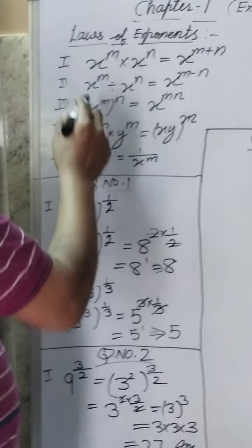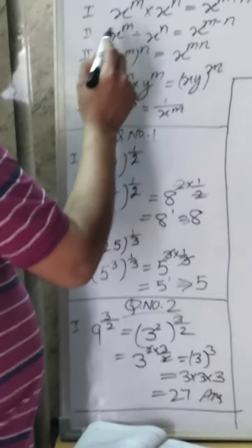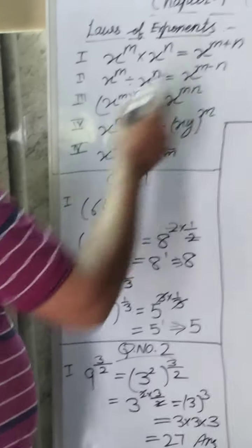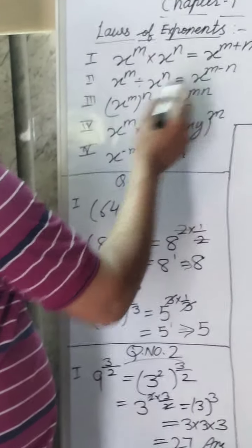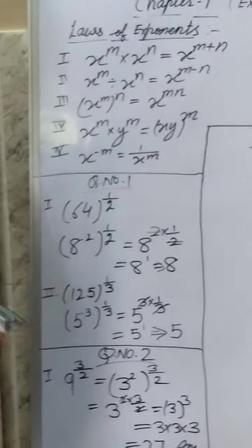Second law, if divide is there and base is same, then power will subtract. So x power m divided by x power n equals x power m minus n.